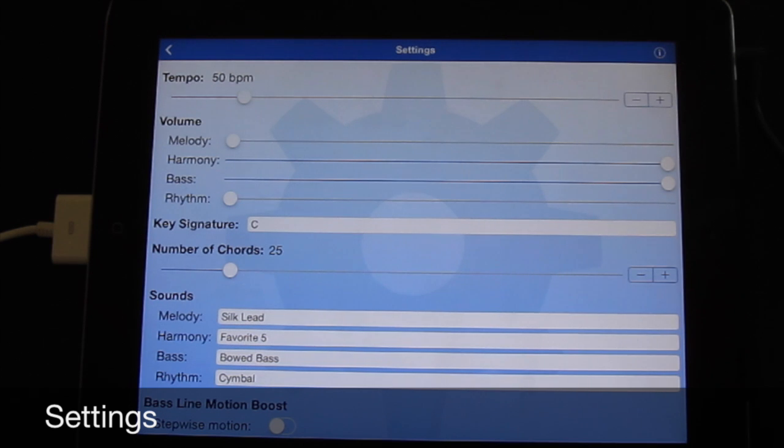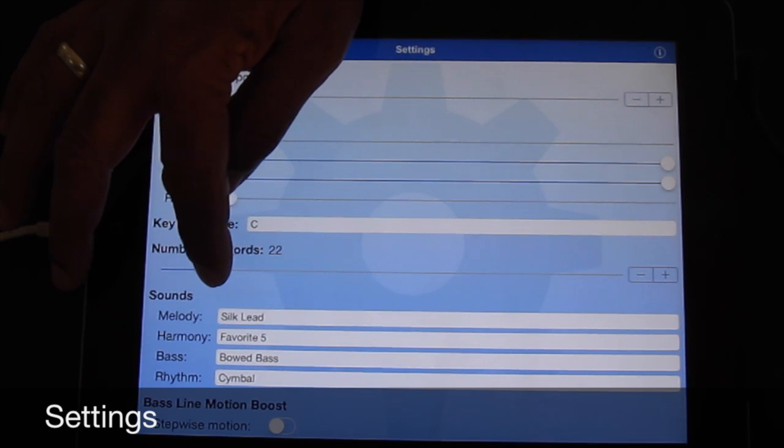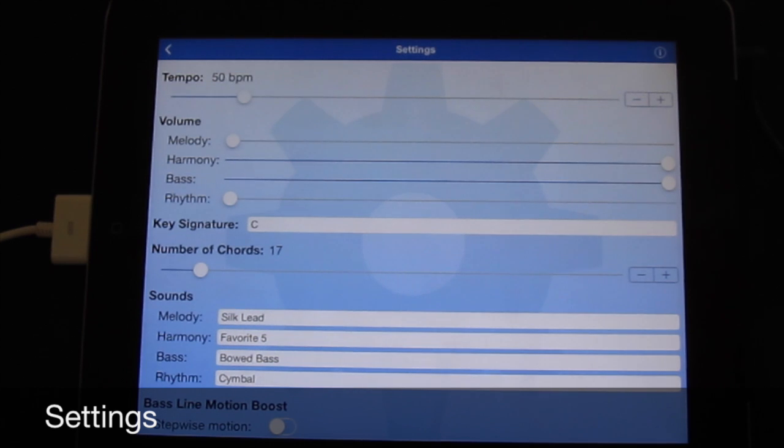We're in the key of C. Right now we have the number of chords selected at 25. Why don't we drop that down to 17, so that essentially we play four measures. I say 17 because it's four measures at 16, but the app will always resolve on the tonic. It will always go back to C if you start in the key of C. So we'll have an additional measure and a complete musical progression.